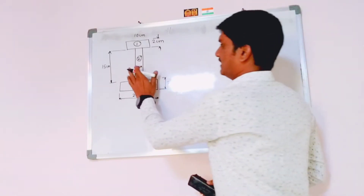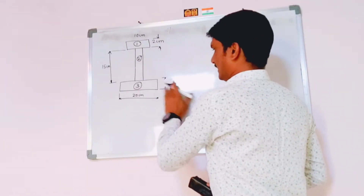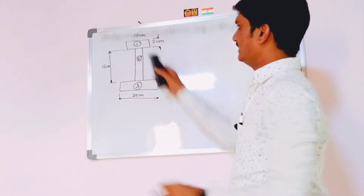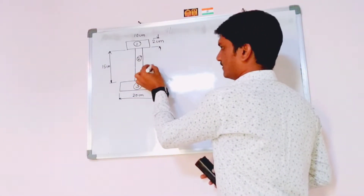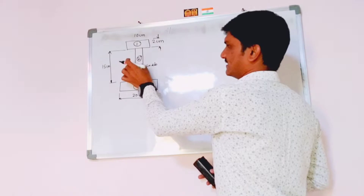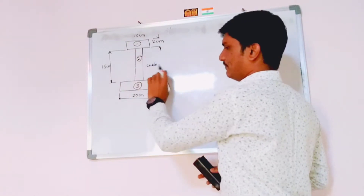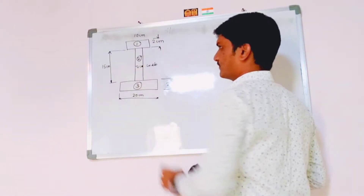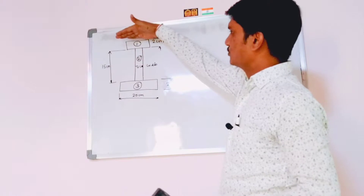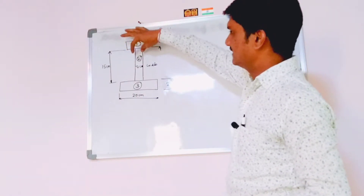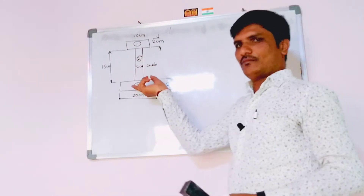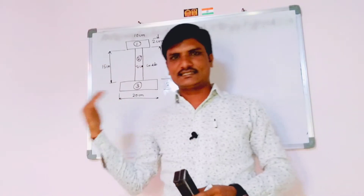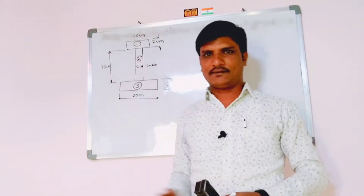In some questions, the width of the rectangular section won't be mentioned every time — it will be mentioned once as 2 centimeters, meaning the web thickness is 2 centimeters throughout. The top part is called the top flange, the middle part is the web, and the bottom is the bottom flange. The three sections may be given in descriptive form or as a diagram.